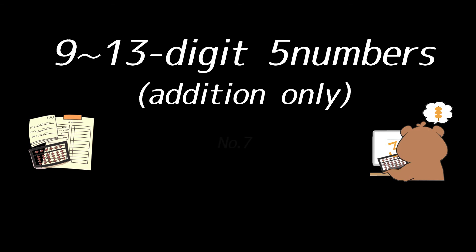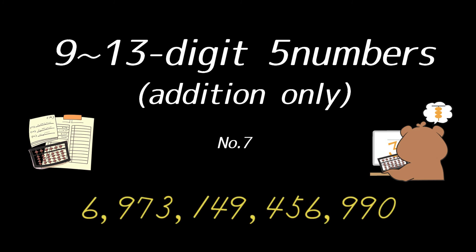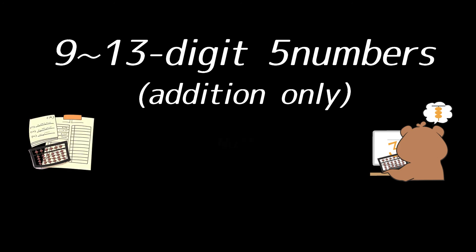Number 7. Starting with $6,850,909,57,651 — 28,959,326,851,570 — 393,898 — 7,630,891,742 — 85,079,786,848. That's all. The answer is 6,973,149,456,990.